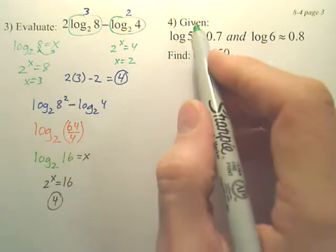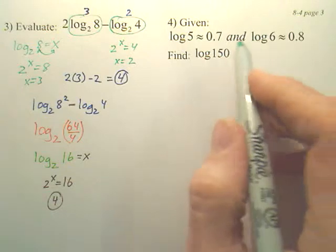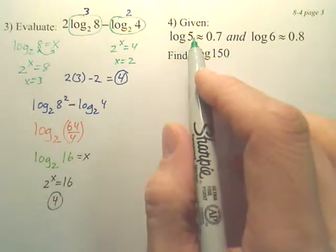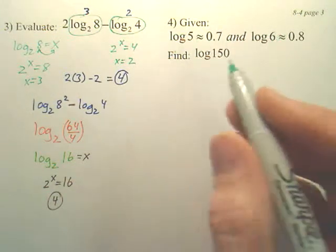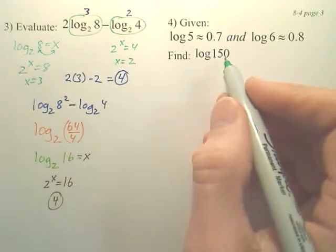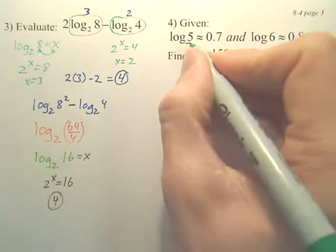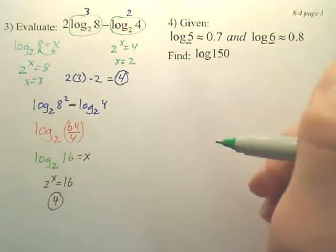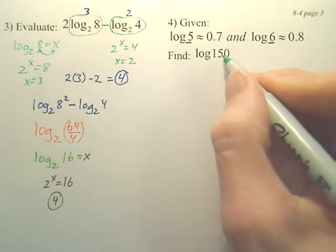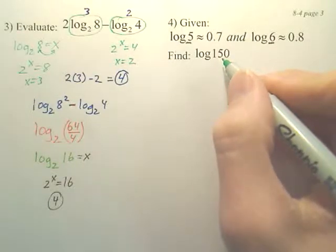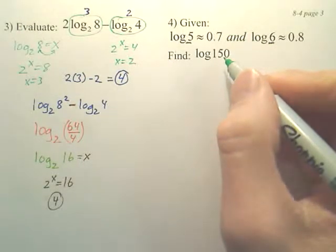Okay. If I give you these two values, which your calculator could give you if you had a calculator, and then I ask you to find log 150, here's how you do it. The first thing you need to do is look at these two numbers, and using fives and sixes, you need to create the number 150. By multiplying fives and sixes, you need to make 150.